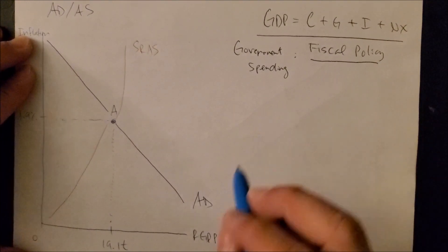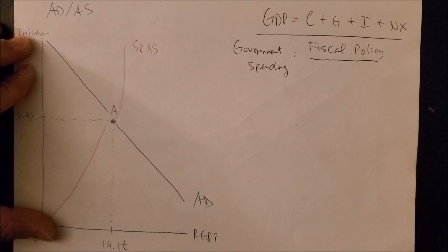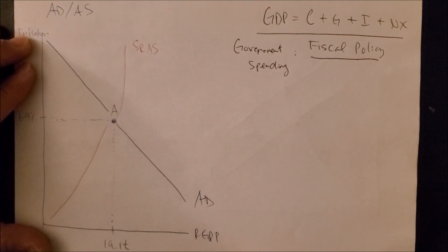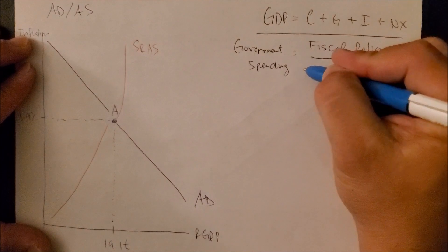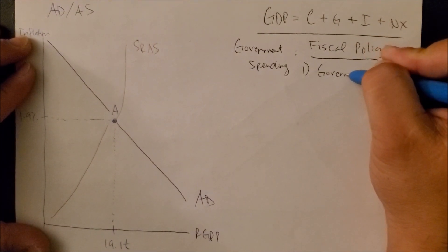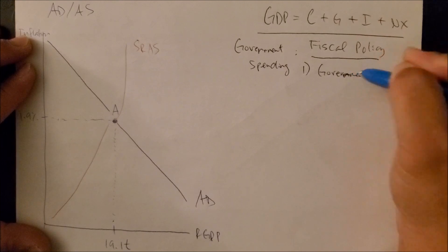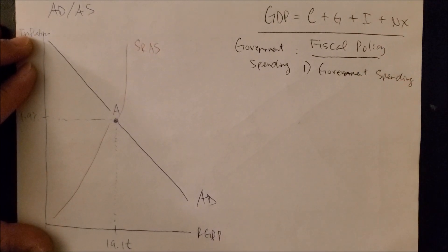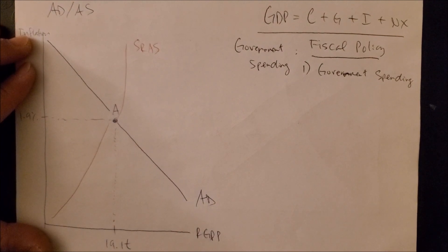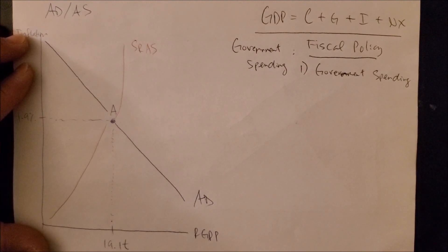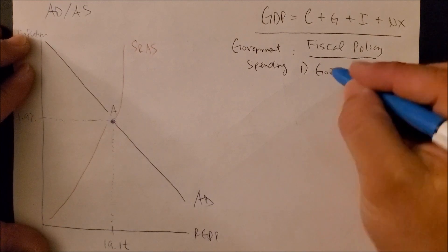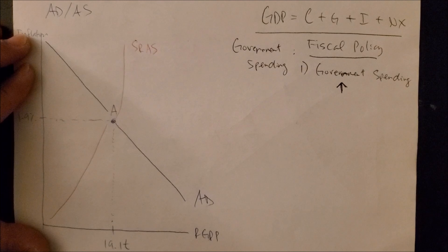In the United States, Congress has the power of the purse — the power to tax and spend. Fiscal policy refers to: (1) the actual amount of government spending that Congress allocates to items such as defense, the treasury, and the interior. When Congress decides to increase spending — for example, purchasing more jets, Humvees, or submarines — they are engaging in fiscal policy.